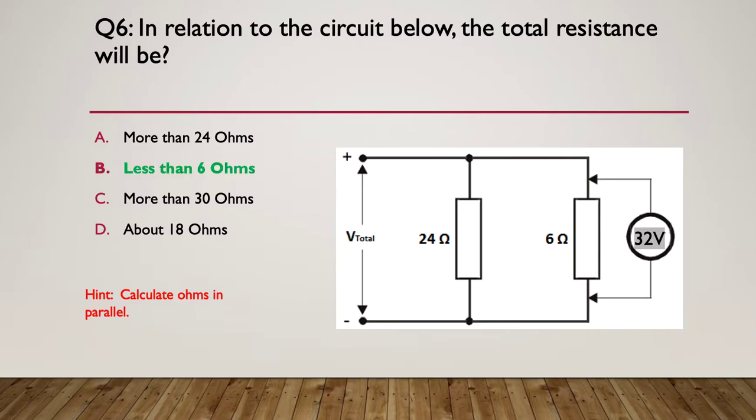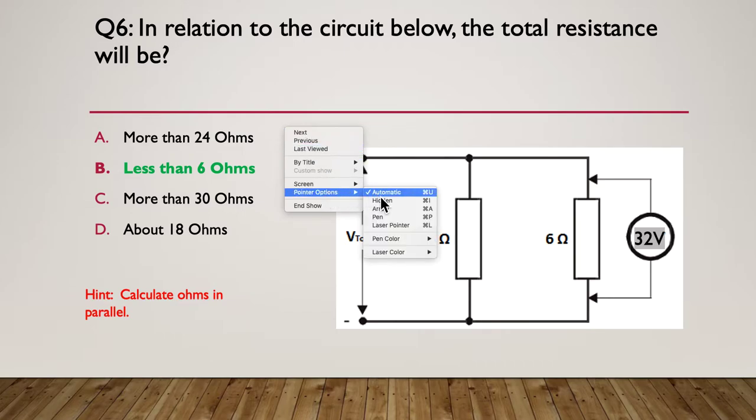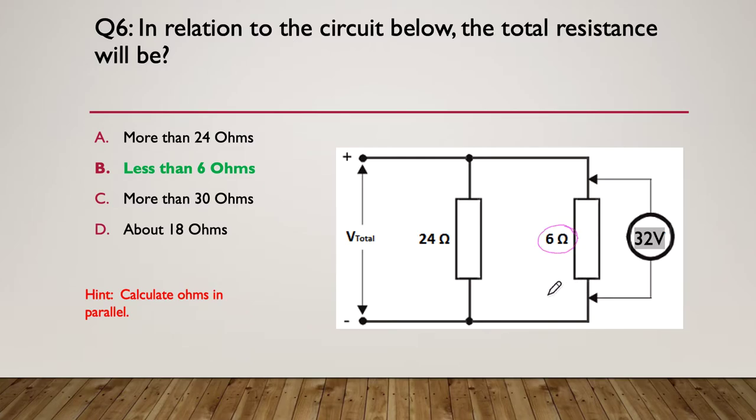So the answer is B, it has to be something less than six ohms. We've got 24 ohms and we've got 6 ohms in parallel. The basic rule is that whenever you've got resistors in parallel, it has to be less than the smallest value. So the smallest value is six ohms, so it has to be somewhere less than six when we've paralleled it with the 24. So the only possible correct answer was somewhere less than six ohms.